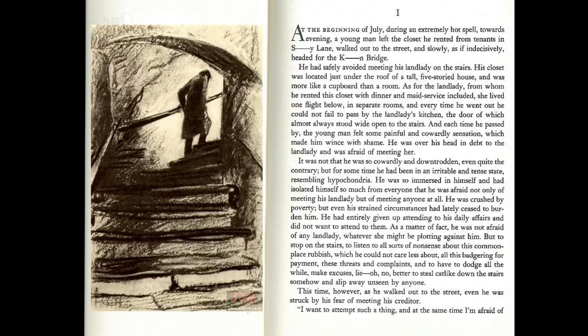In the second paragraph, he's going to begin plowing new ground. "It was not that he was so cowardly and downtrodden" — already your narrator has knowledge of something a narrator would not normally have — "even the contrary. But for some time he'd been in an irritable, tense state. He was so immersed in himself, had isolated himself, had entirely given up attending to his daily affairs. As a matter of fact, he was not afraid of any landlady." Now he's introducing you to the debate going on in his head. Was he afraid of the landlady? Well, yes — but he's not really afraid of her. So the narrator lets you come in, and he's going to do this through the whole book.